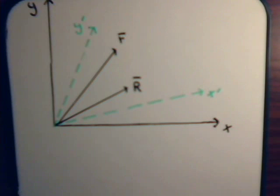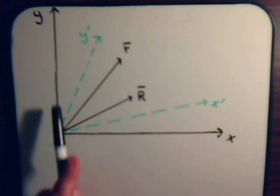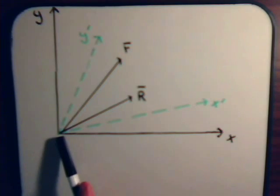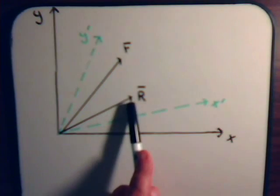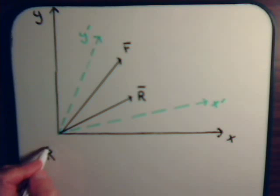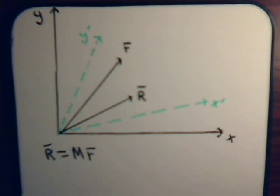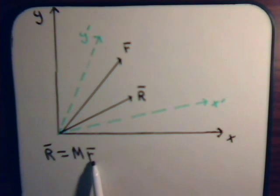We have a situation we've dealt with several times in previous videos: an xy axis system with a vector labeled small r and another vector labeled big R. We have a matrix M that transforms small vector r into large vector R. The components of vectors small r and big R are expressed in the xy coordinate system.